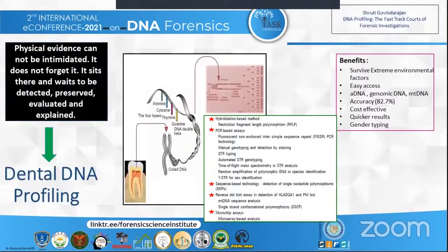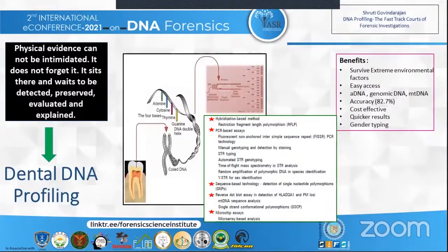Dental DNA is most often taken from the pulp of mostly the posterior teeth because of their high pulpal volume. Then the same process of DNA fragmentation, pattern transfer, DNA probing, and radiography is done to retrieve DNA fingerprints. The different methods that can be applied to dental DNA are hybridization-based methods, PCR-based methods, sequence-based technology, reverse dot-blot assays, and microchip assays.